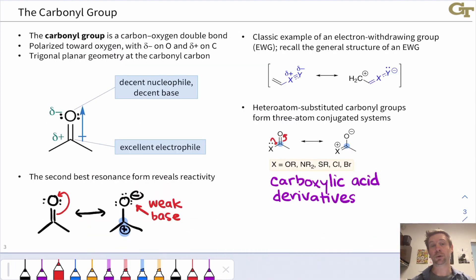Let's begin now with the carbonyl group. The carbonyl group is simply a carbon-oxygen double bond. That's it. It's that simple. The carbonyl oxygen has two lone pairs and the CO double bond is heavily polarized toward the more electronegative oxygen atom. So we see partial negative charge at oxygen, partial positive charge at carbon. The oxygen is a decent nucleophile and decent base, because oxygen is pretty electronegative.